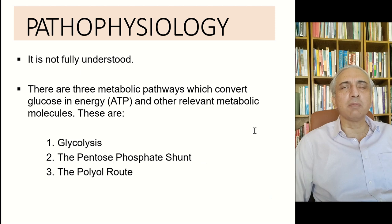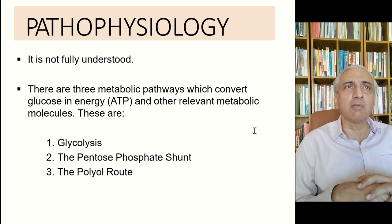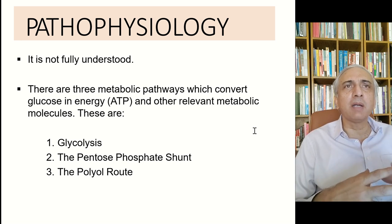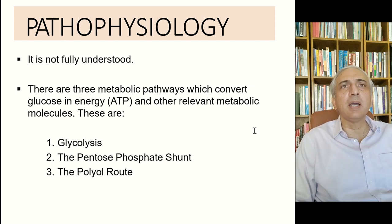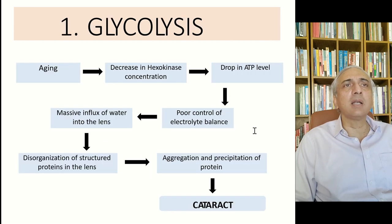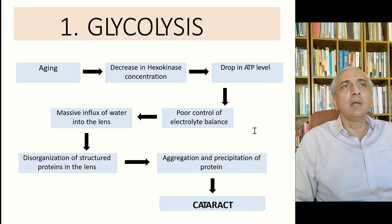Briefly going through the pathophysiology of cataract formation: it is not fully understood, but three metabolic pathways control the conversion of glucose into ATP energy. These are glycolysis, the pentose phosphate shunt, and the polyol pathway. From these we can extrapolate what is happening in cataract development.